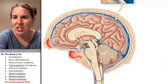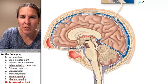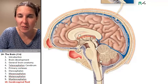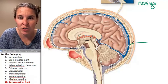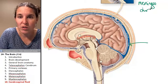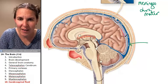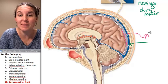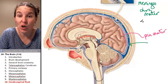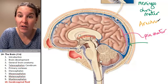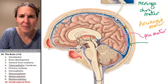Let's label our meninges, the structures surrounding your brain and spinal cord. We have the dura mater, which is tight to the skull. Then we have the pia mater, tight to the brain. And between them was the arachnoid mater — a spider-webby material in between.